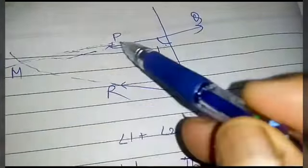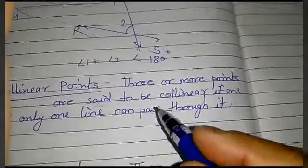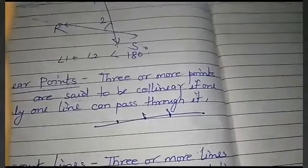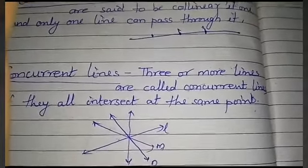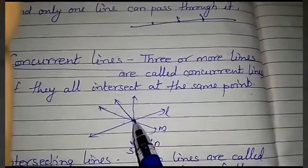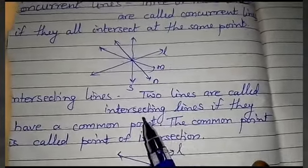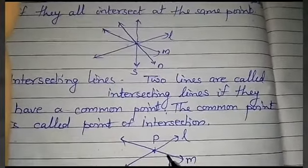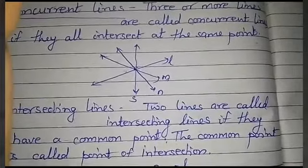Additional definitions: Collinear points — three or more points are collinear if one and only one line can pass through all of them; they lie on the same line. Concurrent lines — three or more lines are concurrent if they intersect at the same point; that point is called the point of concurrence. Intersecting lines — two lines are called intersecting lines if they have a common point, known as the point of intersection.